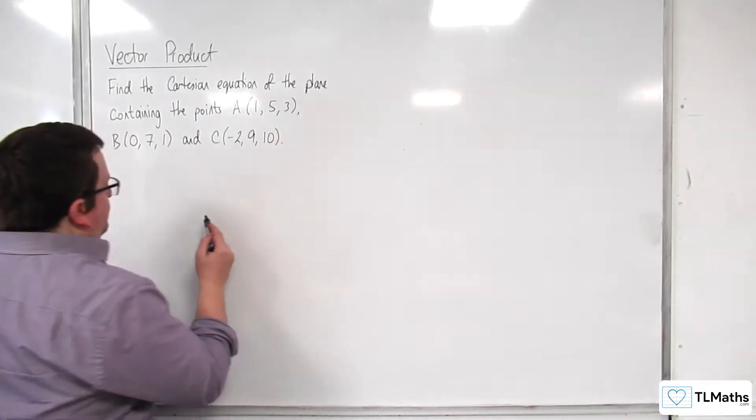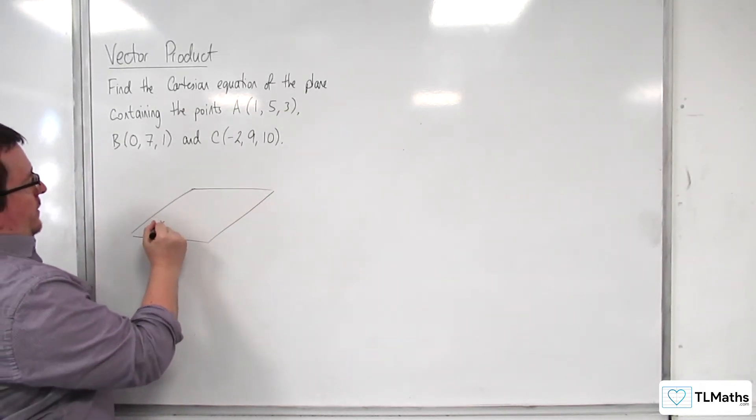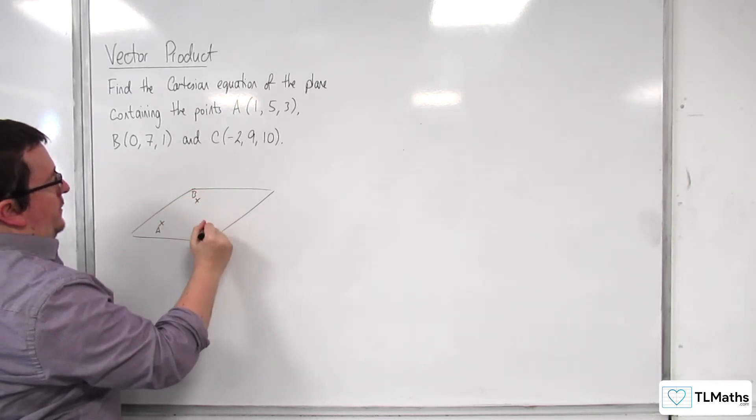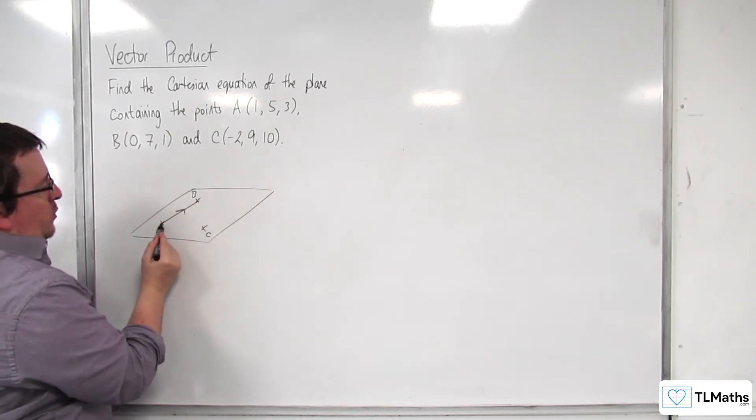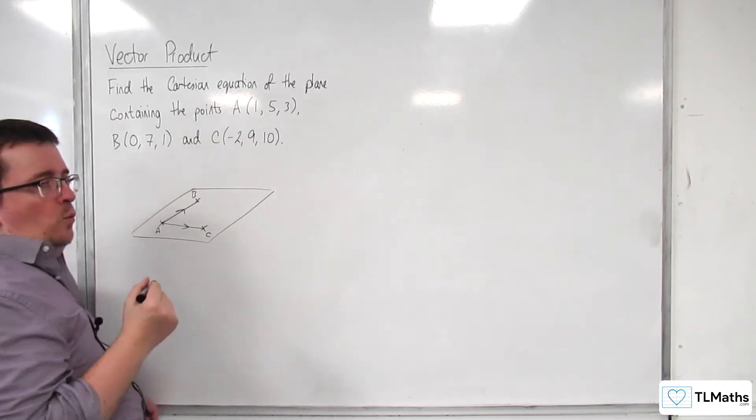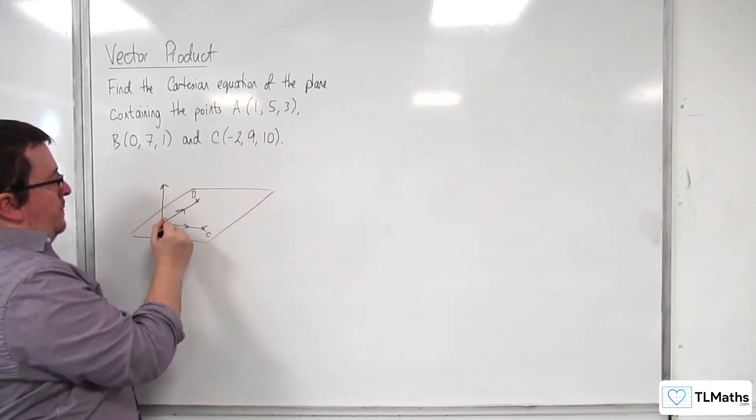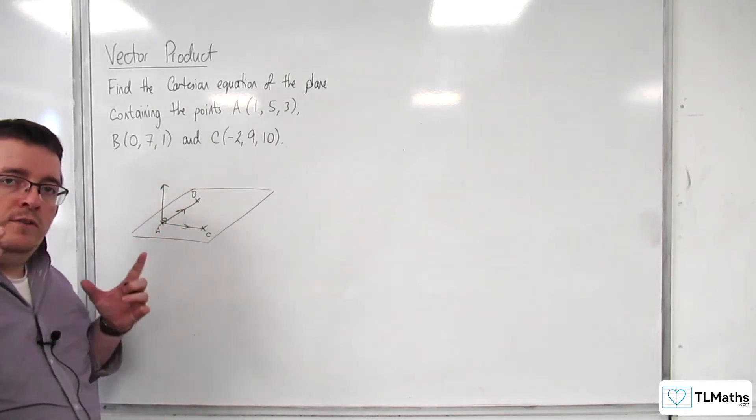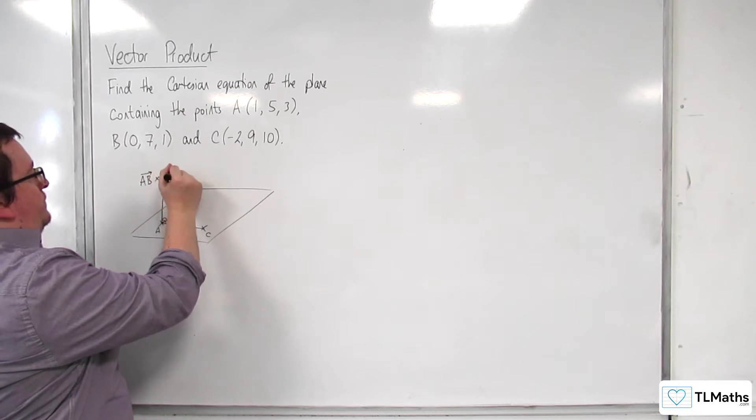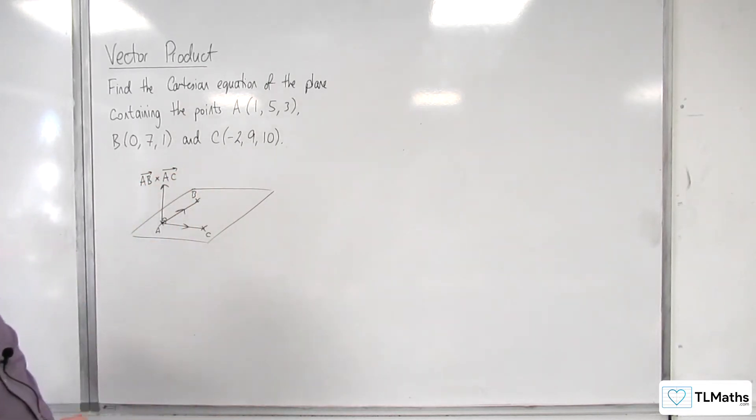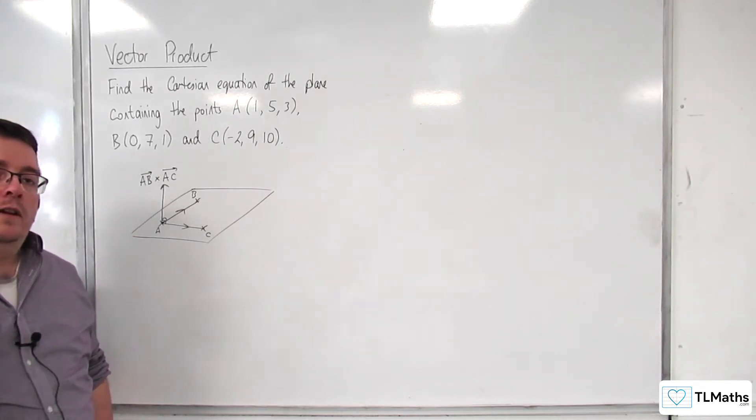So the idea here is that you've got this plane and you've got three points: A, B, and C. And what I'm going to do is work out the vector AB, work out the vector AC. Then when I use the vector product, that's going to give me a vector that is perpendicular to both of them, which is going to be the normal vector to the plane. So AB crossed with AC. I can then use that and a point on the plane in order to work out the Cartesian equation. So that's my plan.